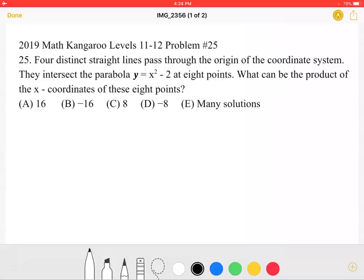This is the 2019 Math Kangaroo, Levels 11-12, Problem Number 25. Four distinct straight lines pass through the origin of the coordinate system. They intersect the parabola y equals x squared minus 2 at 8 points. What can be the product of the x coordinates of these 8 points?